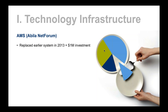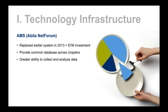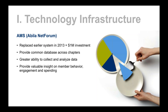At first we were on a different legacy system — it was okay but did not have all the features and functions that our chapters and members needed. After we got the websites up and running with a few iterations, we were then able to address the AMS. This was my fourth AMS, and hopefully my last — they're not easy projects. Anyone who's ever done one will tell you they're very, very difficult. The selection, development, and implementation are not easy. Abilinet Forum has been terrific for us — it is the backbone of our whole organization, and it's been about a million dollar investment.